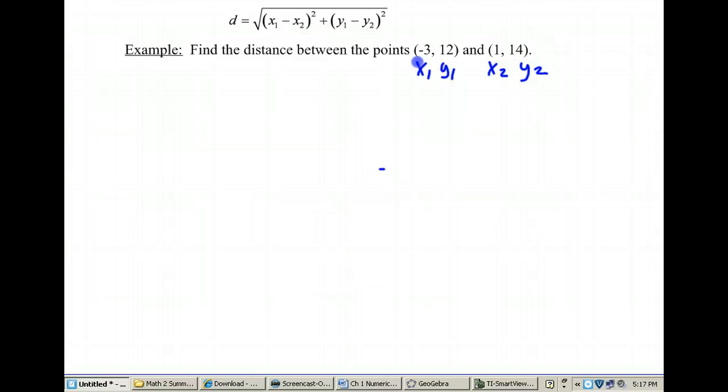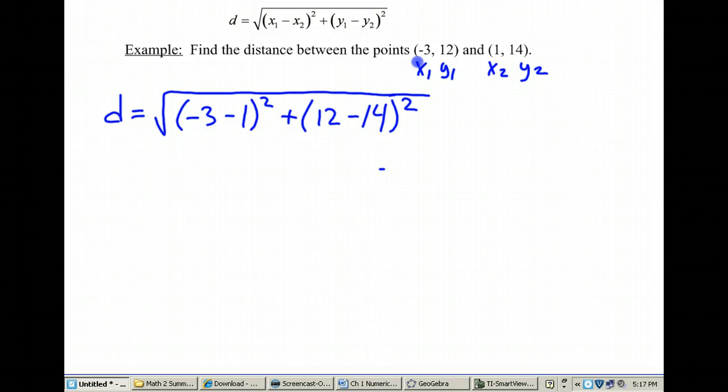So my distance formula, and you can see it written up above to remind us, will be the square root of x1 minus x2. So that's negative 3 minus 1, quantity squared, plus y1 minus y2. That's going to be 12 minus 14, quantity squared. And all of that's underneath the square root.